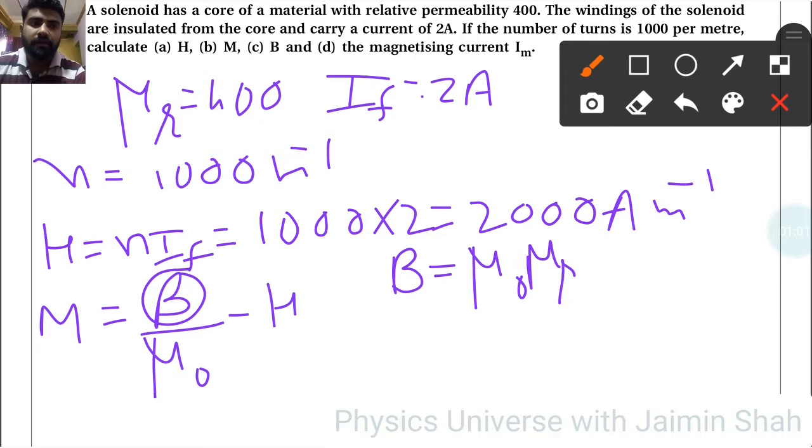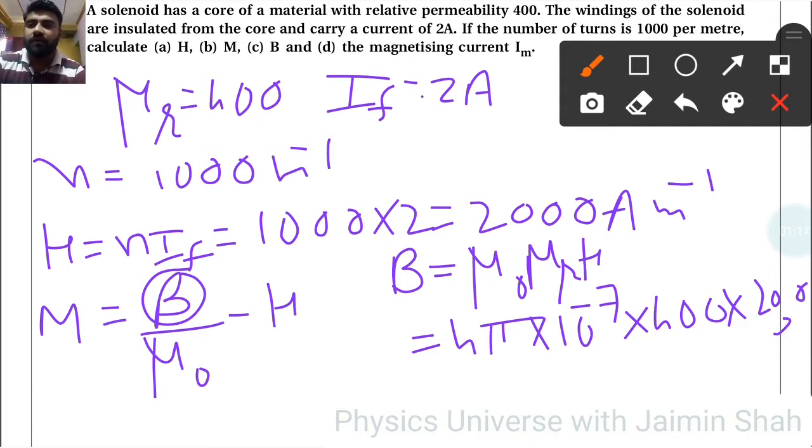B = μ₀μᵣH, so μ₀ = 4π × 10⁻⁷, μᵣ = 400, and H = 2000. Now 4 × 3.14 × 400 × 2000